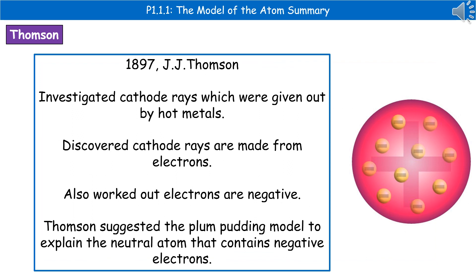The second scientist that contributed valuable ideas was J.J. Thomson in 1897. His experiments involved cathode rays, which were given out by hot metals. He discovered that these cathode rays were made from electrons, and he worked out that the electrons have a negative charge. His model of the atom was the plum pudding model — negative electrons sitting within a positive cloud, giving an overall neutral atom.